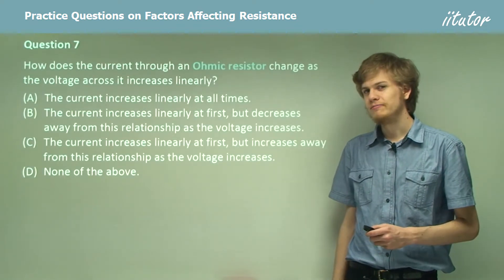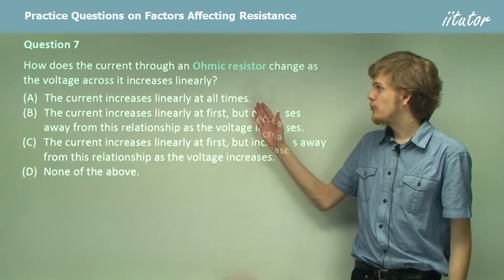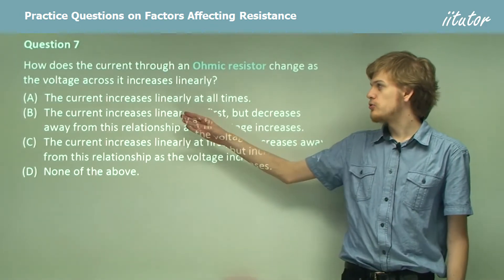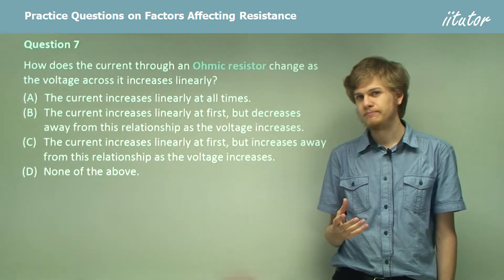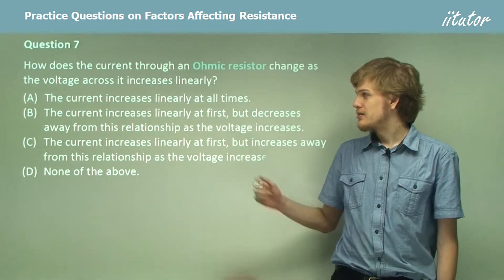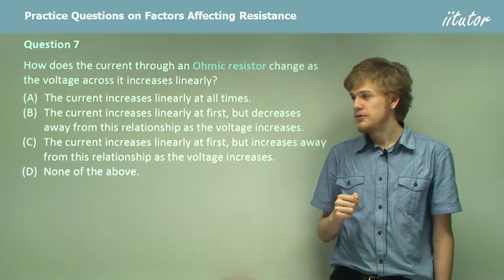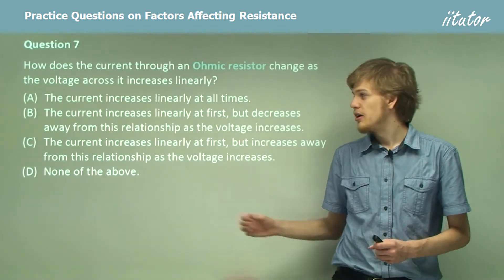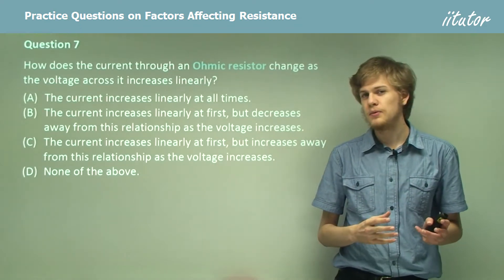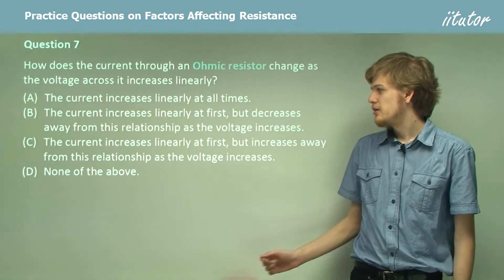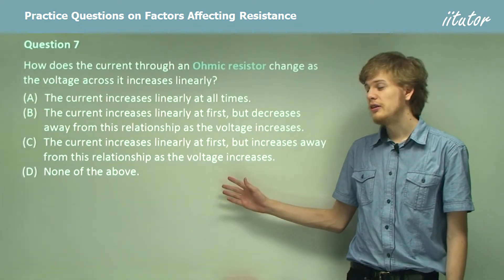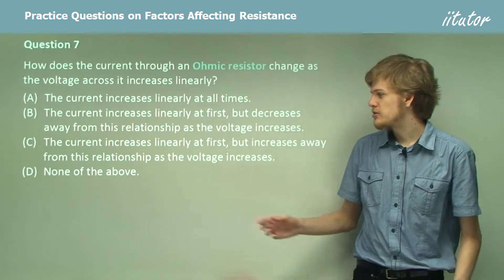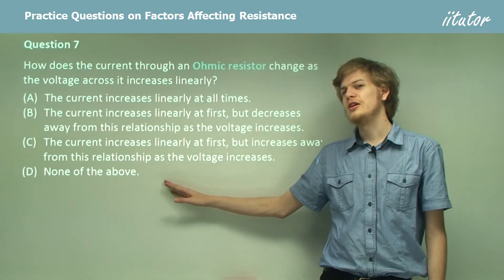Question 7. How does the current through an ohmic resistor change as the voltage across it increases linearly? Does the current increase linearly at all times? Does it increase linearly at first but decrease away from the relationship? Does it increase linearly at first but increase away from the relationship? Or is it none of the above?